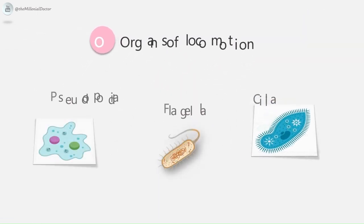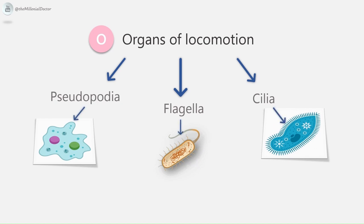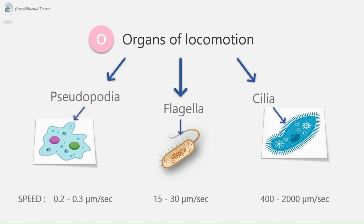From the ectoplasm develop the organs of locomotion. There are three types: first, pseudopodia — seen in Rhizopoda, it is a temporary prolongation of cytoplasm seen in amoeba, serving locomotion or engulfing food. Second, flagella — seen in Zoomastigophora, these are long thin thread-like filaments. Third, cilia — seen in Ciliata, these are fine needle-like filaments covering the entire surface. Comparing speeds: pseudopodia move at 0.2–0.3 µm/s, flagella at 15–30 µm/s, and cilia at 400–200 µm/s.